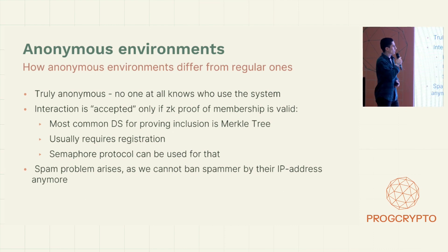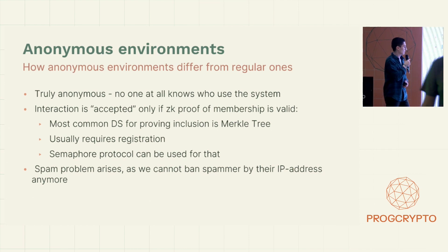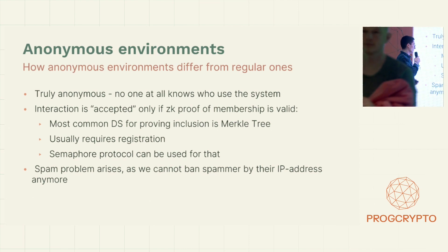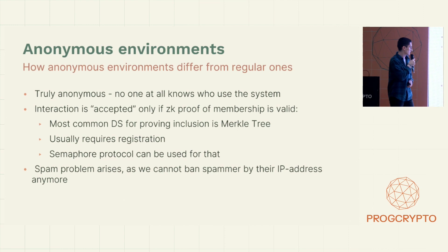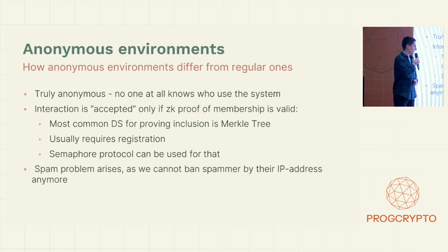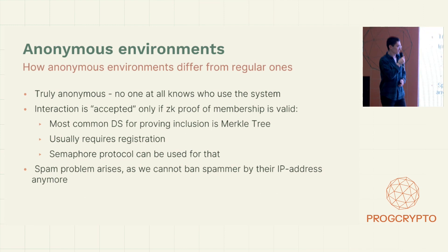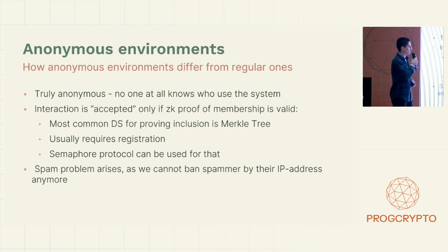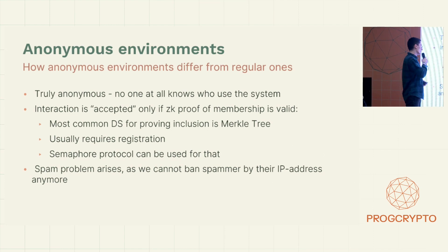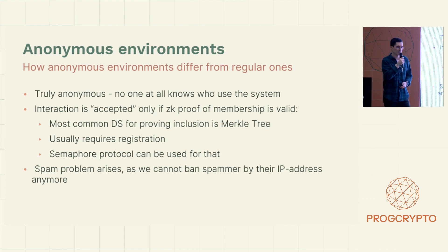Usually a Merkle tree is used, as it's a very powerful data structure for proving inclusion effectively. For interaction, we do membership proofs — proof of inclusion in a Merkle tree in the circuit. The Semaphore protocol can be used for that to create such systems conveniently.